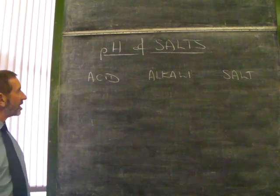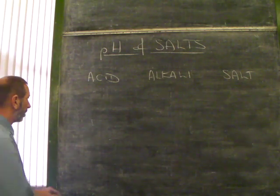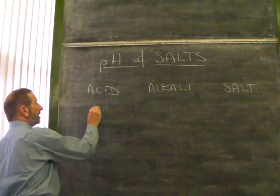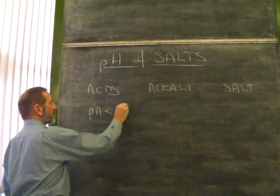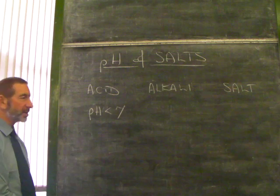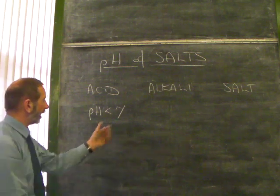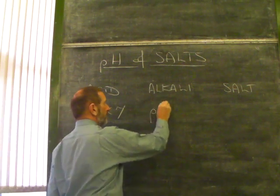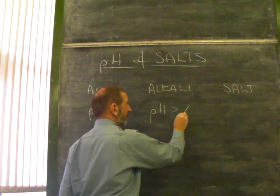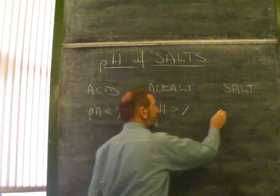pH of salts. What would you expect the pH of an acid to be? Well, I hope your answer would be that the pH of an acid would be less than 7, and the more powerful or acidic it is, the smaller the number. Likewise, with an alkali, alkalis have a pH greater than 7, and salt, pH equals 7.